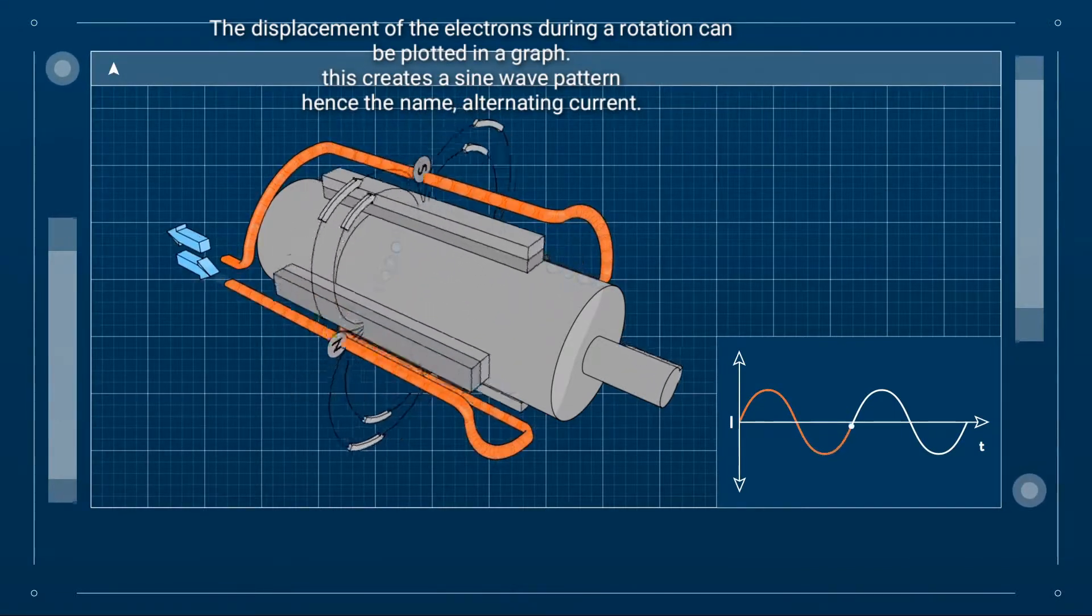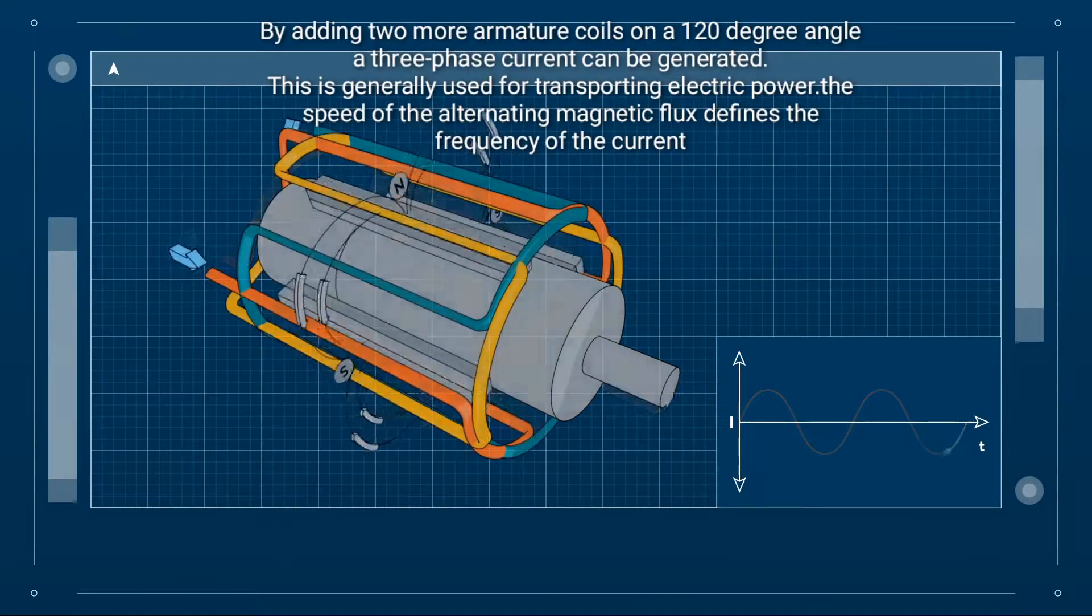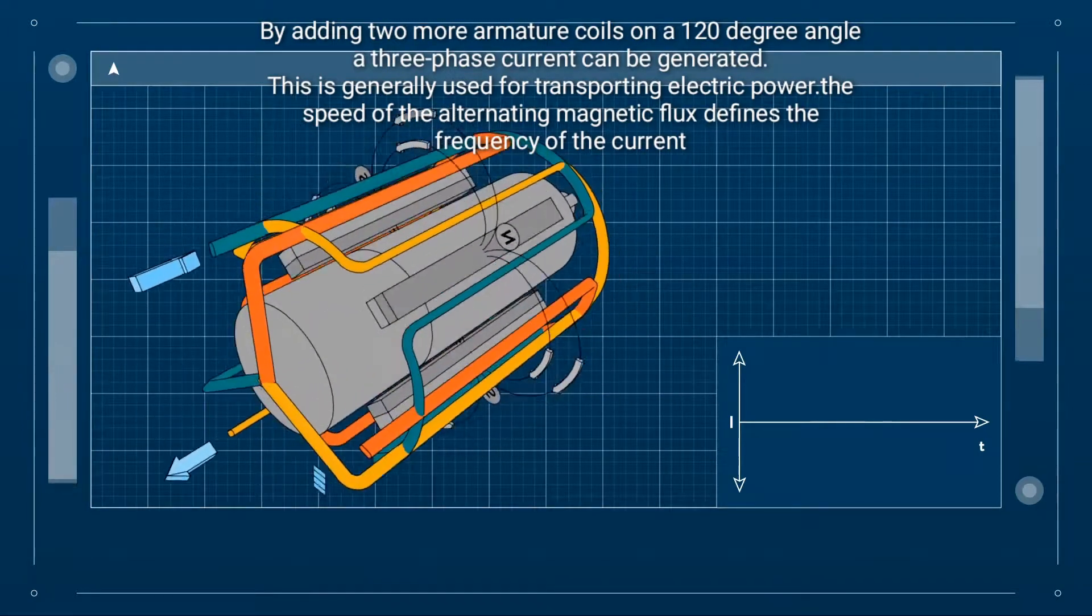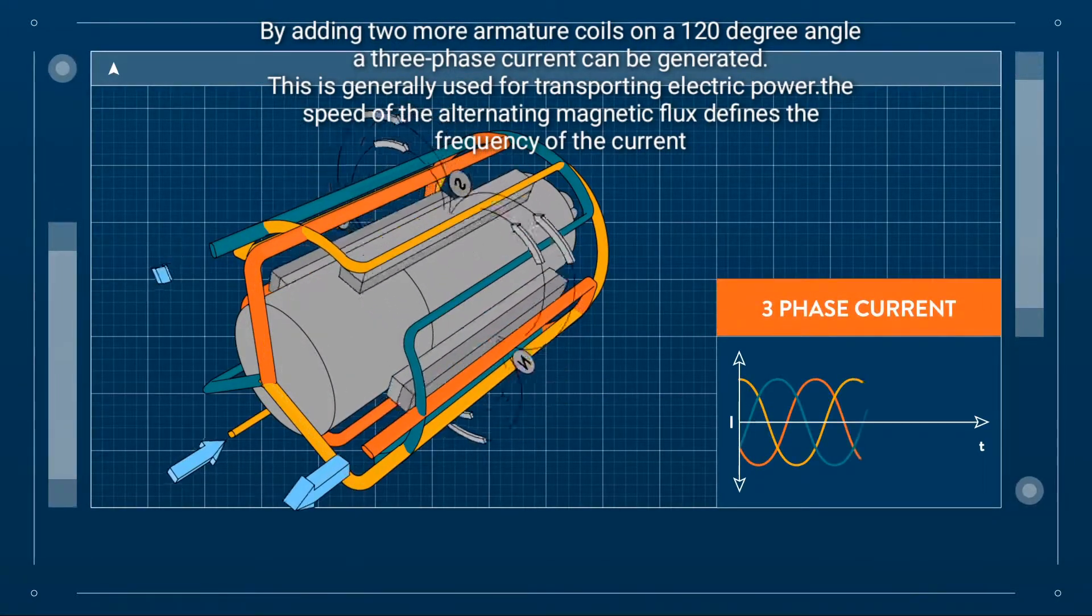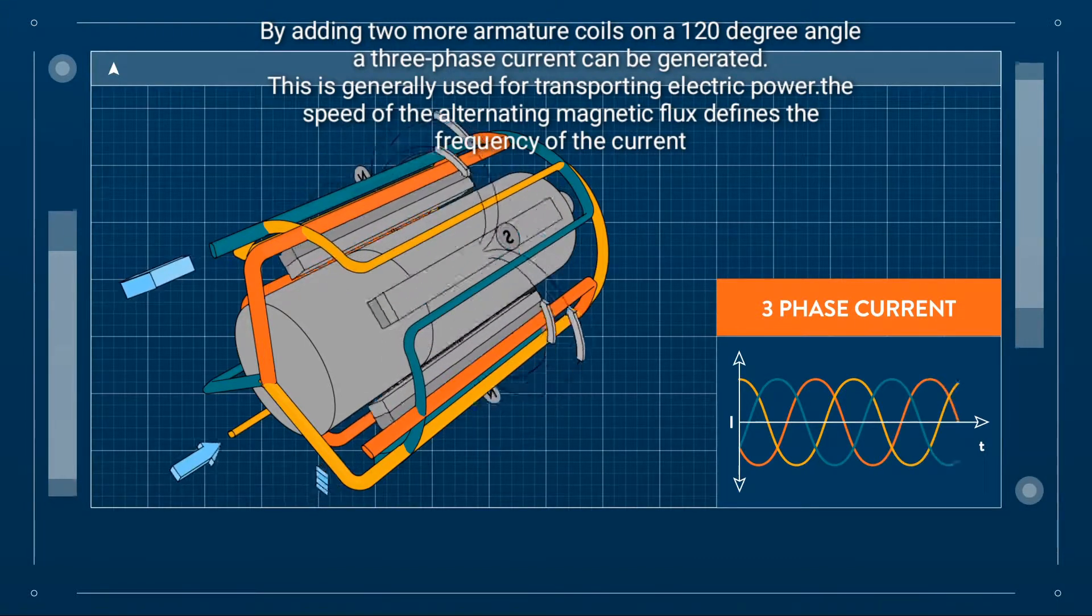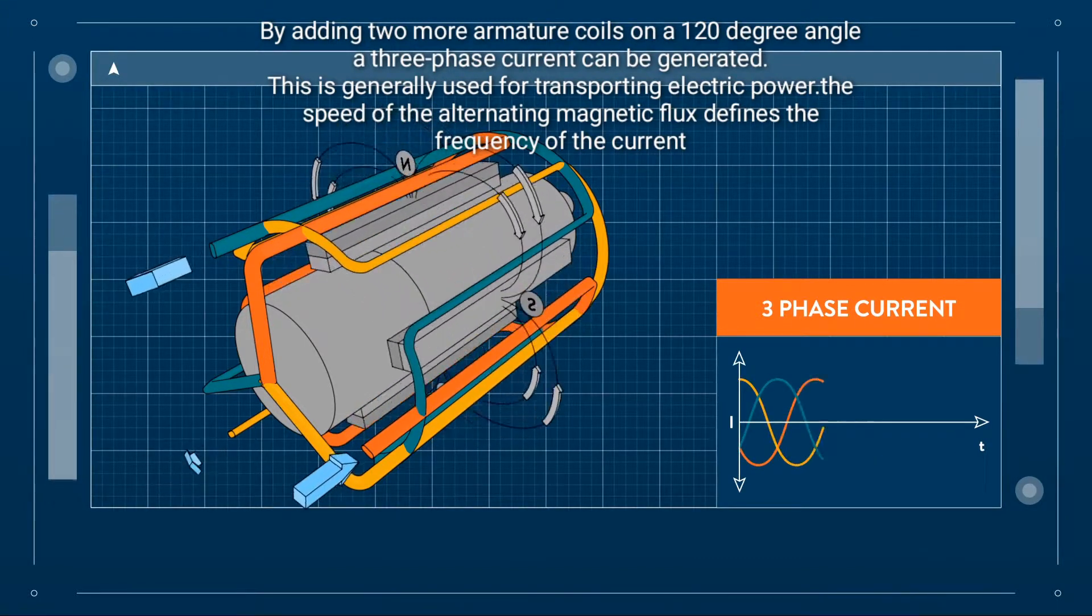By adding two more armature coils on a 120 degree angle, a three phase current can be generated. This is generally used for transporting electric power.